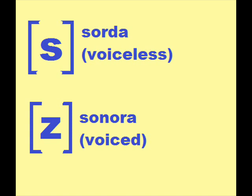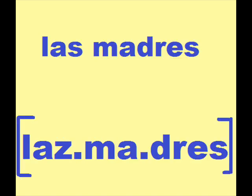You'll notice in words that when S comes before a voiced consonant, that S — which is sorda or voiceless — will become voiced. For example, in the phrase las madres: when you say it slowly, that S doesn't change. But when you say it quickly, las madres, you notice that S, which sounds like S, becomes a Z. Because that S comes before a voiced consonant, the M, it becomes voiced — las madres.